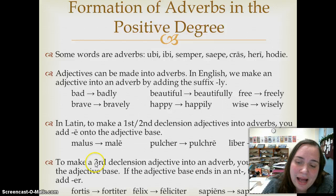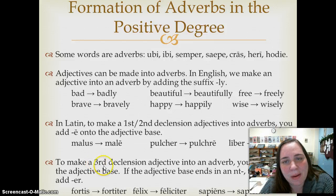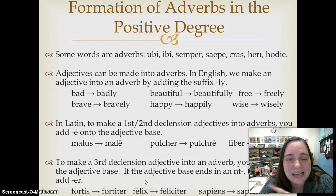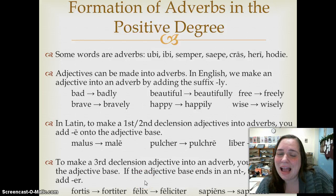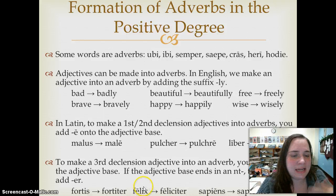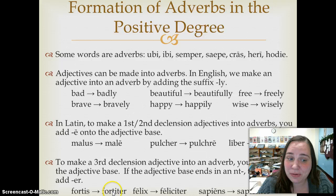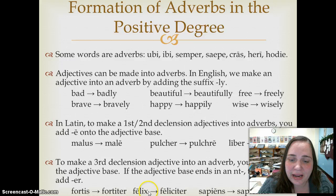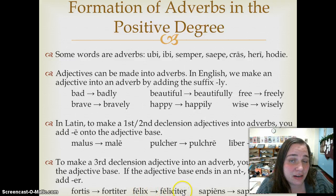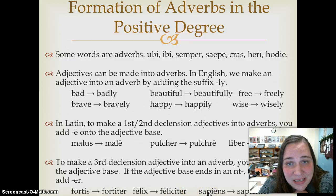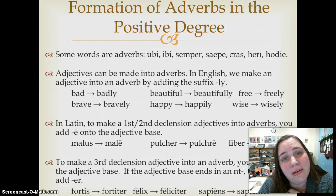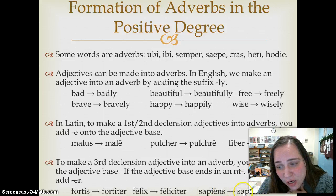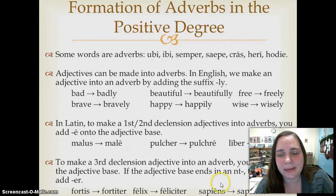Third declension adjectives form into adverbs by adding -iter to the adjective base, unless the adjective base ends in -nt, and then you just add -er. For example: fortis becomes fortiter, brave to bravely. Felix becomes feliciter, happy to happily. Sapiens has an adjective base of sapient-, so instead of adding -iter, we just add -er: sapiens becomes sapienter, wise to wisely.